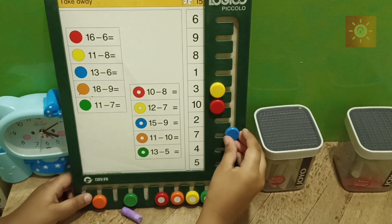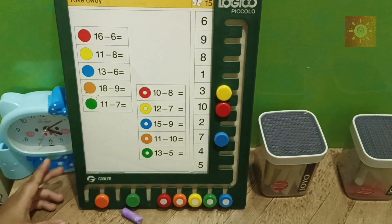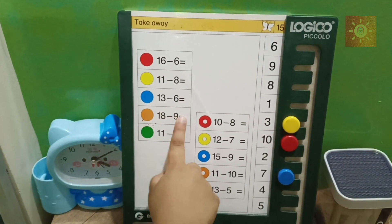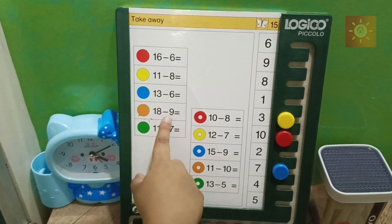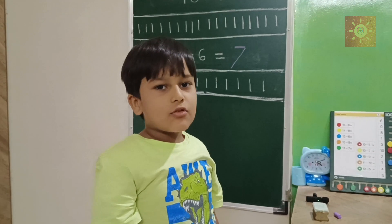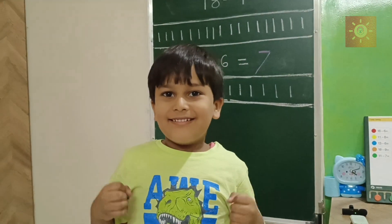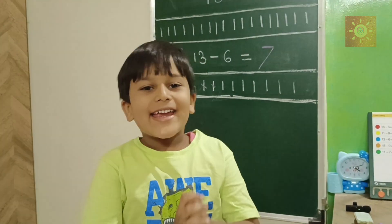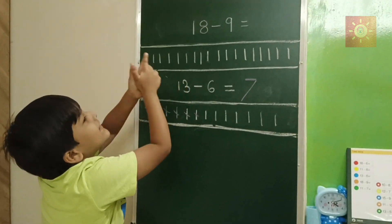Seven here! The next subtraction is 18 minus 9, friends. Look, now we are going to do 18 minus 9.